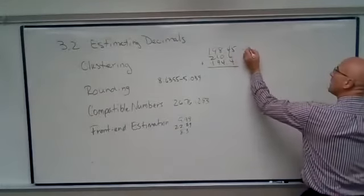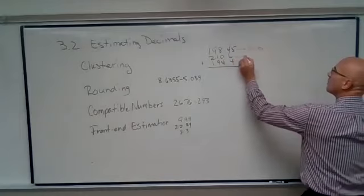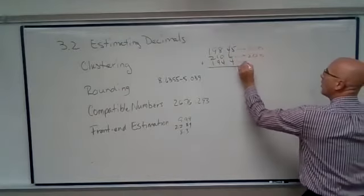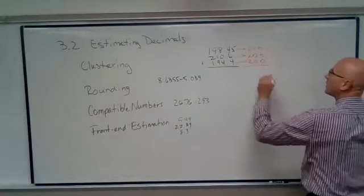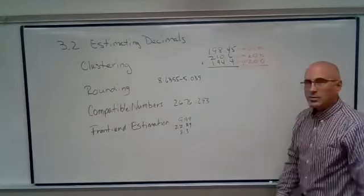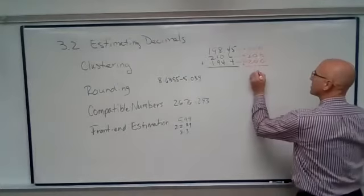So if we were to estimate, we could maybe make all of these 200. And when we add those together, we get 600.